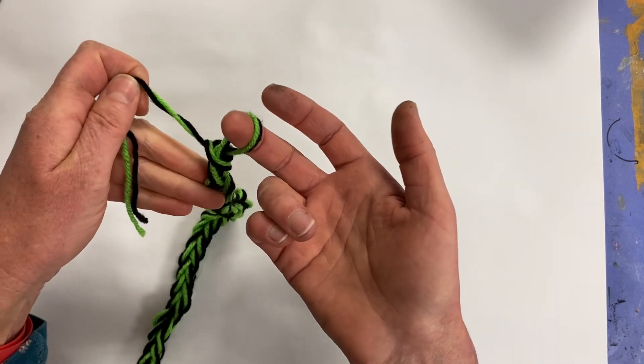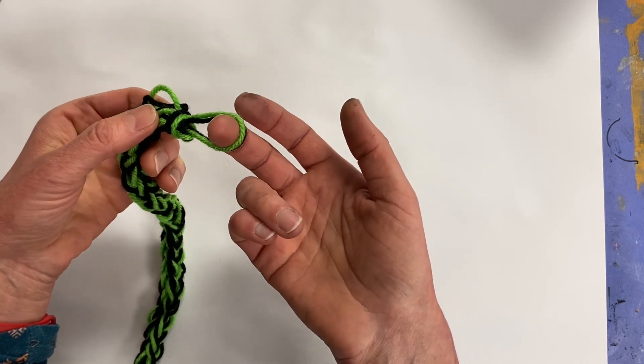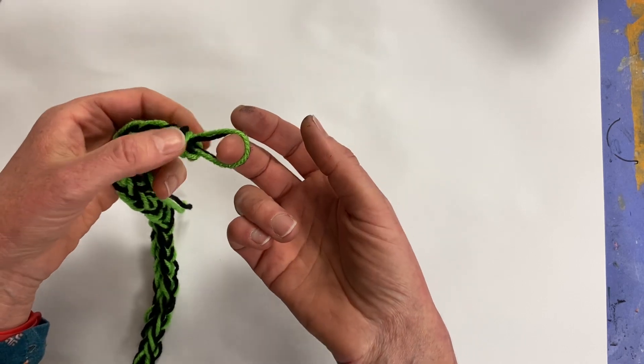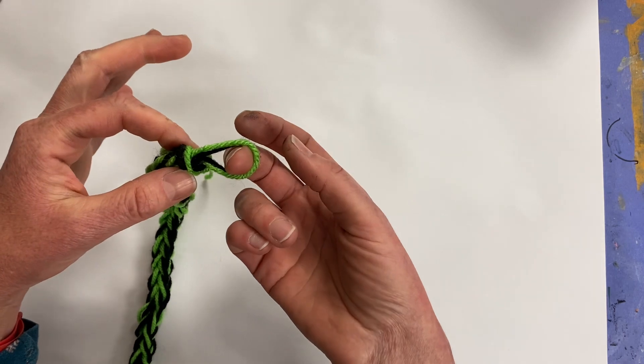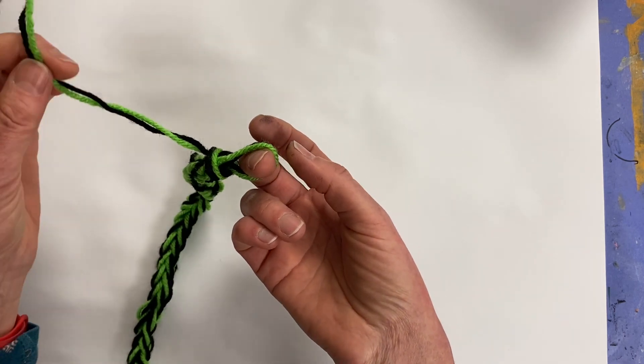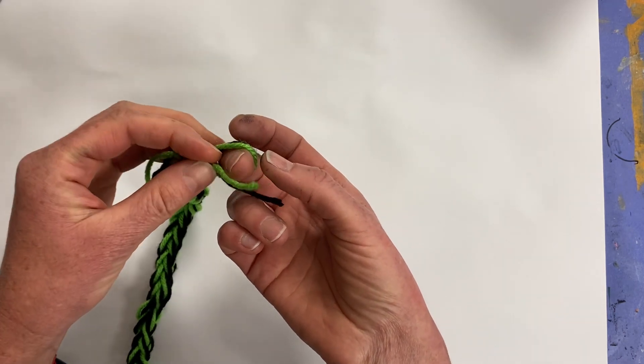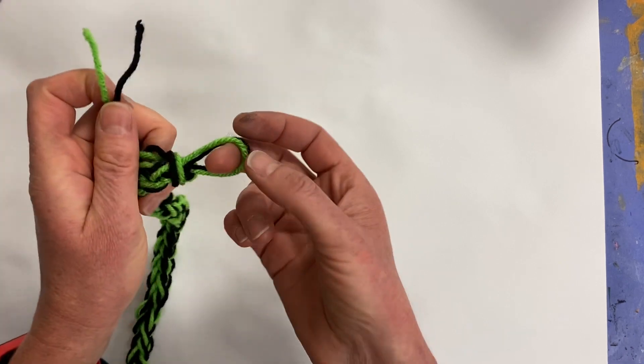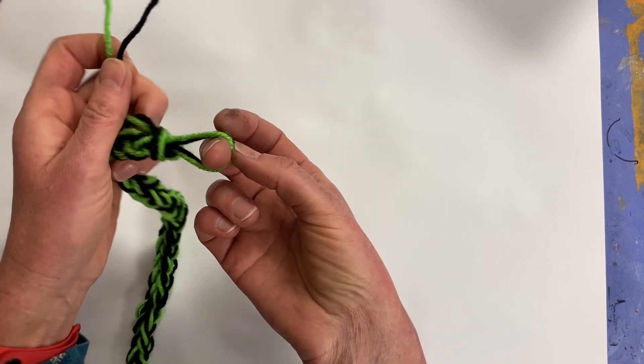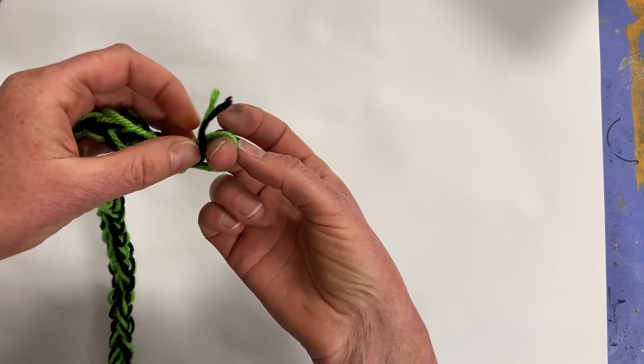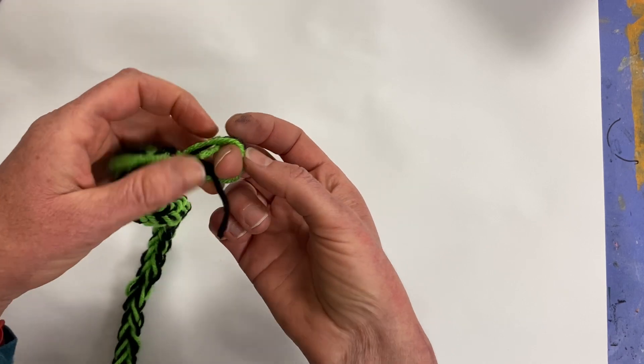Then what you're going to do with it still attached to your finger, do you see how there's that space right there in that loop? You are going to take that short end and you are simply going to push it through it. So see that loop right there? I need to go through it. So I'm going to take them and just push it right through it.